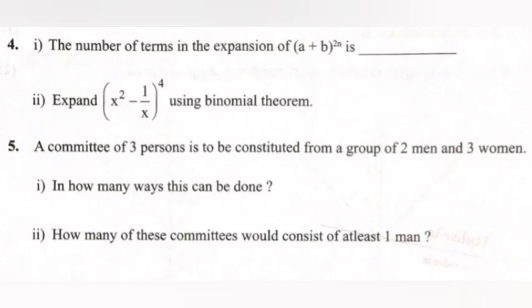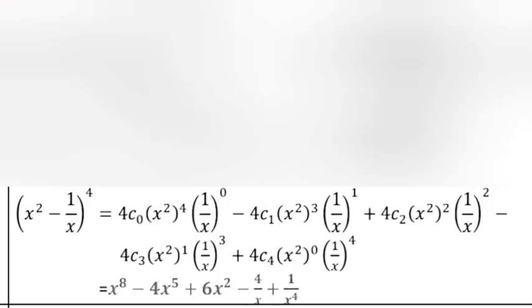Problem 5, part i: The number of terms in the expansion of (a + b)^(2n) is blank. Part ii: Expand (x² - 1/x)^4 using binomial theorem. Answer to part i: 2n + 1.